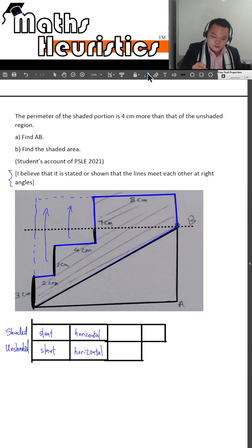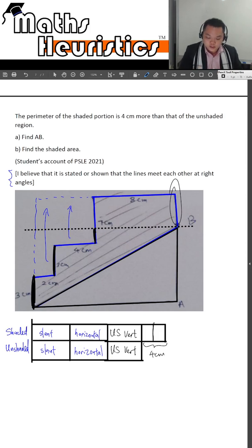The unshaded vertical, and for the shaded portion it comprises of the unshaded vertical length and two more lengths adding up to 4 cm. So each of these lengths here must be 2 cm.